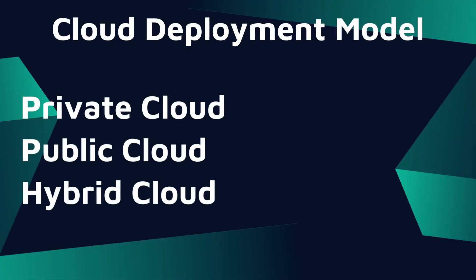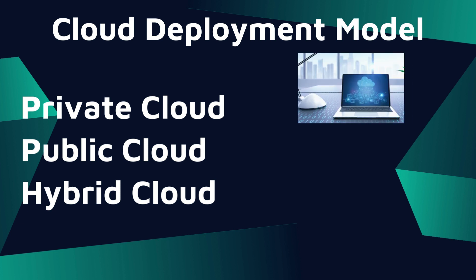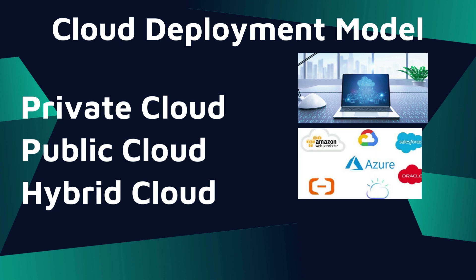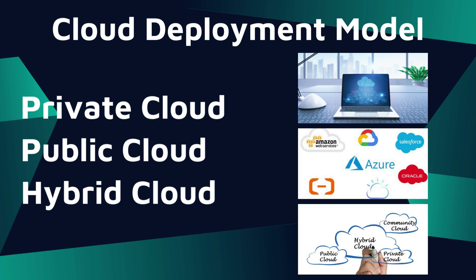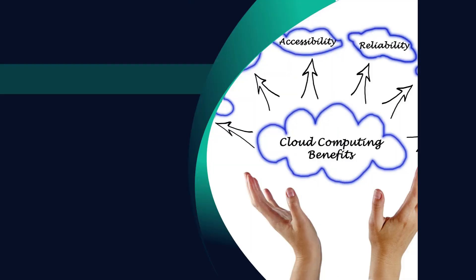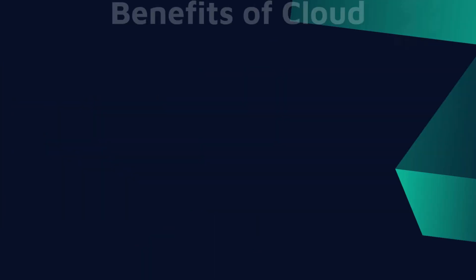Now let's talk about cloud deployment models, which describe how our infrastructure is configured. We have three types: private cloud, public cloud, and hybrid cloud. Private cloud belongs to a particular entity or organization — you have full control. Public cloud is available for everyone; anyone can use it, and the hardware may be shared by other organizations. Hybrid cloud is a combination of private and public cloud, where some components are kept in-house and some services use the public cloud.